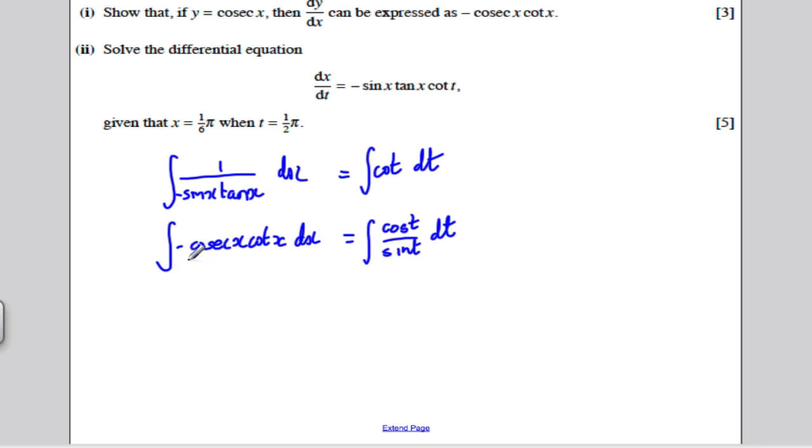Now, this looks very confusing as an integration. So I'm a bit stuck. I need to think, how can I use part one? If I know that if I've got y as cosec x and I differentiate it, I get this. Going backwards, integrating this, I must get this. So the integral of this must be using part one, cosec x with a constant, which I'll take care of on the right-hand side.